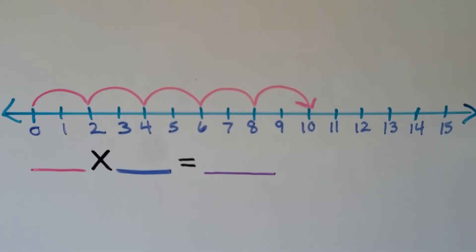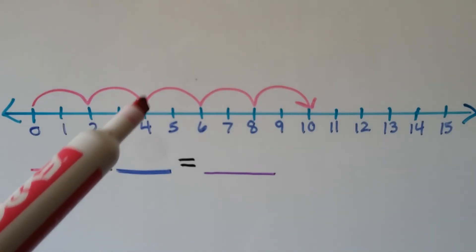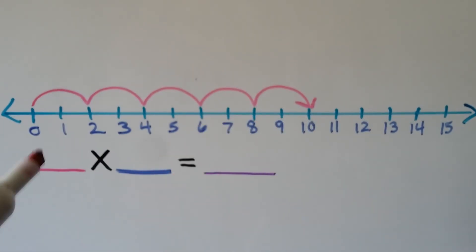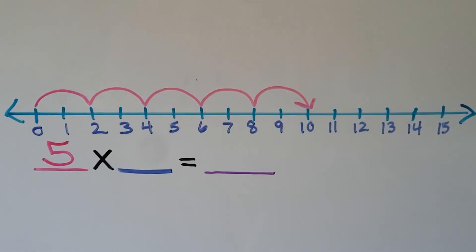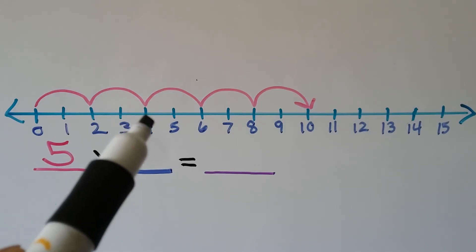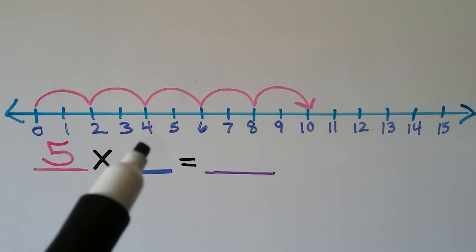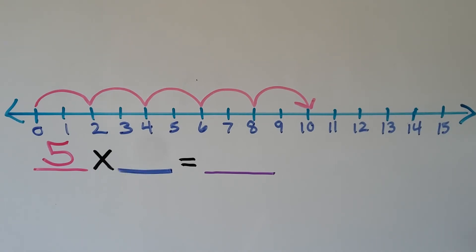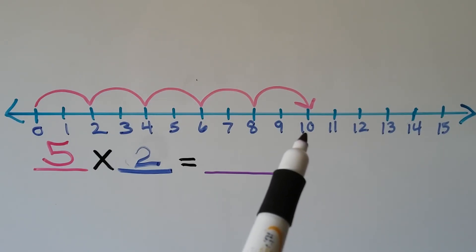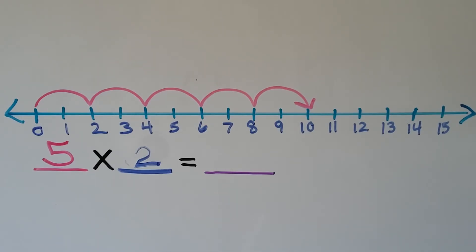For this one we're going to do the same thing — count how many jumps there are: one, two, three, four, five. So we know our first number is five. We look to see how many were jumped — equal jumps of two, so there were two in each jump. We look to see where it landed — it landed on ten, that's our product. This number line shows five times two is equal to ten.